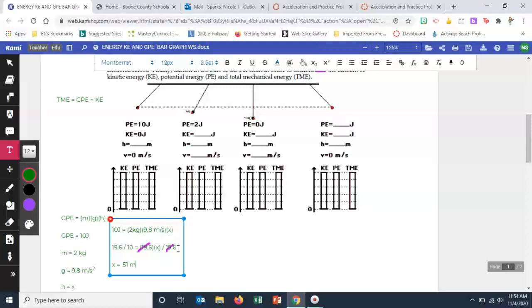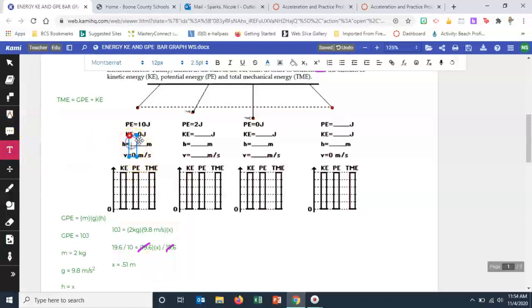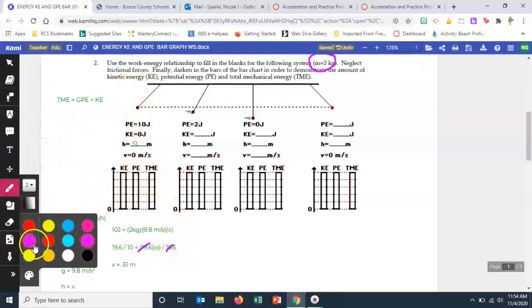So we can go back and check ourselves. So let's plug that number in just to double check. Take two times 9.8 times 0.51, and we should come up with the 10 joules, which I get 9.9. So I'm good. So that's our answer right there. So even if you wanted to, we could plug that in up here too. So our height is that 0.51.